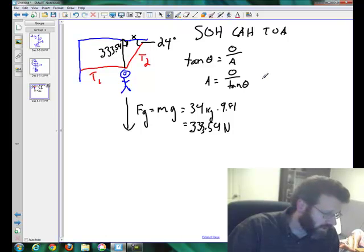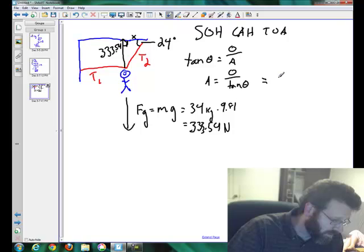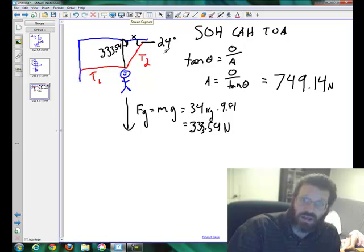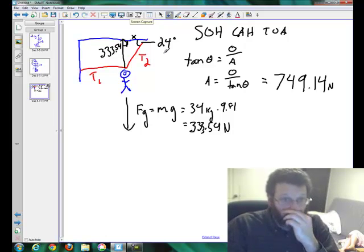And so in this case we're going to do 333.54 divided by the tan of 24 degrees, and that should give us a result of 749.14.